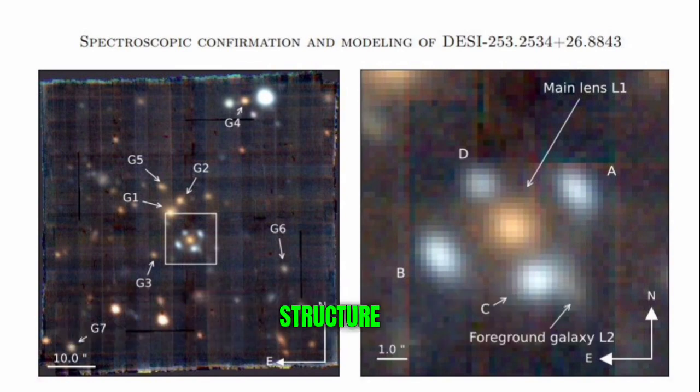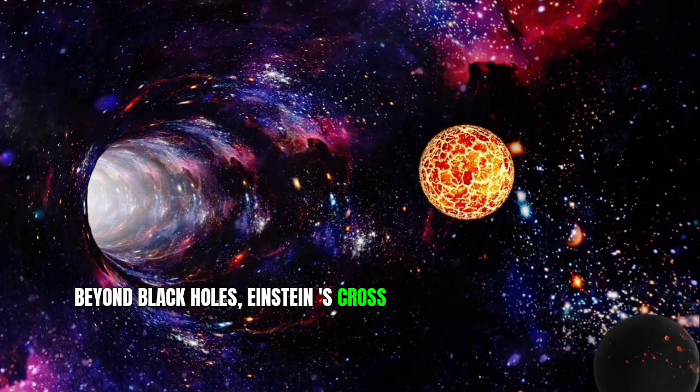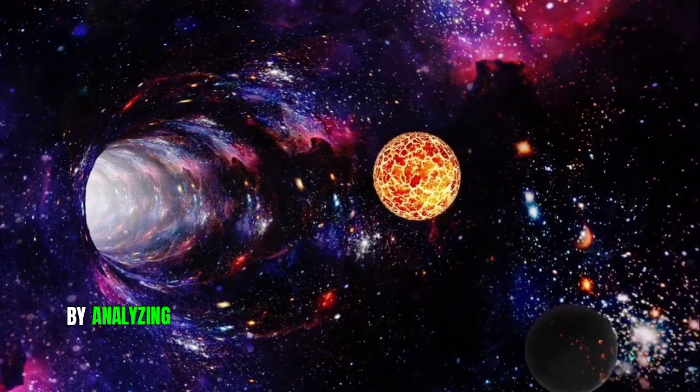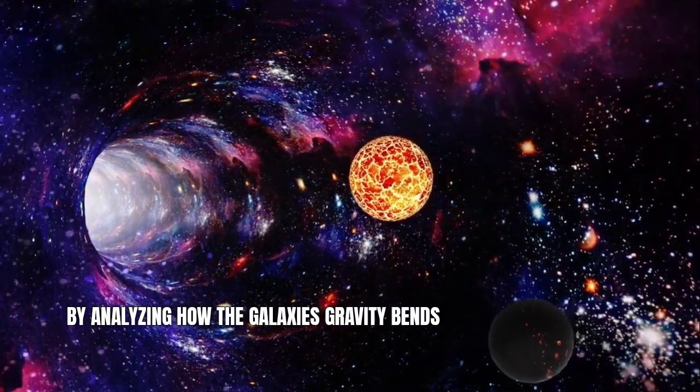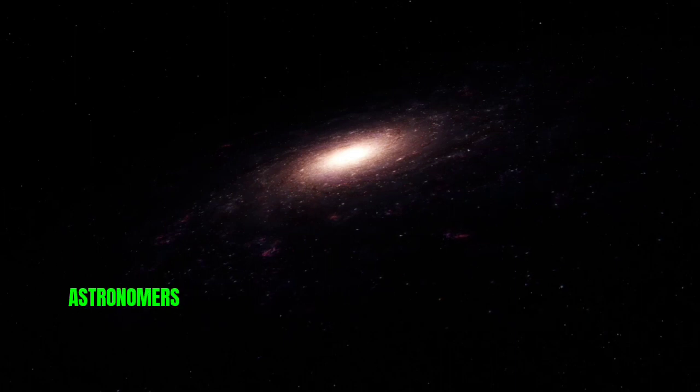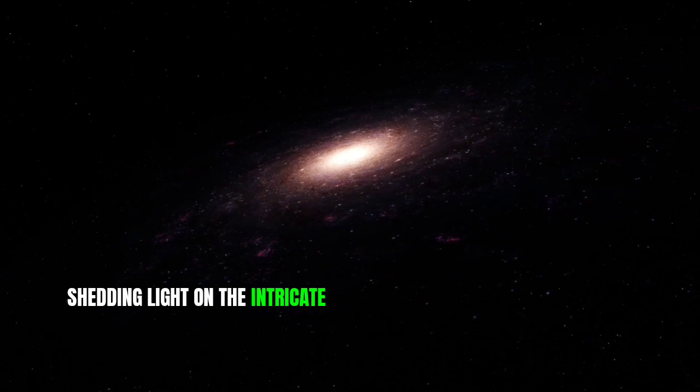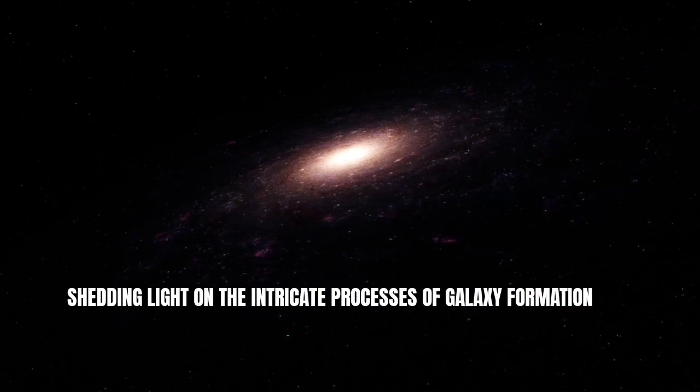Understanding galaxy structure. Beyond black holes, Einstein's cross allows us to probe the structure of the foreground galaxy itself. By analyzing how the galaxy's gravity bends the quasar's light, astronomers can uncover valuable insights into the galaxy's mass distribution, shedding light on the intricate processes of galaxy formation and evolution.